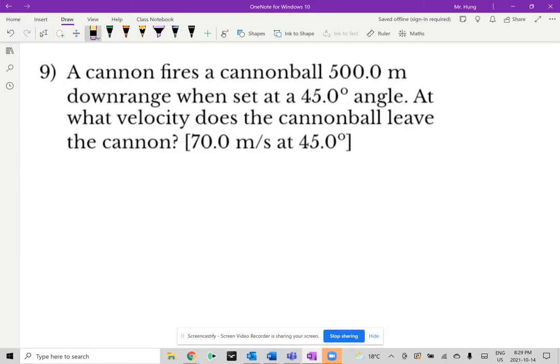Hi everyone, let's take a look at the following physics kinematics example. A cannon fires a cannonball 500 meters downrange when set at a 45 degree angle. At what velocity does the cannonball leave the cannon?